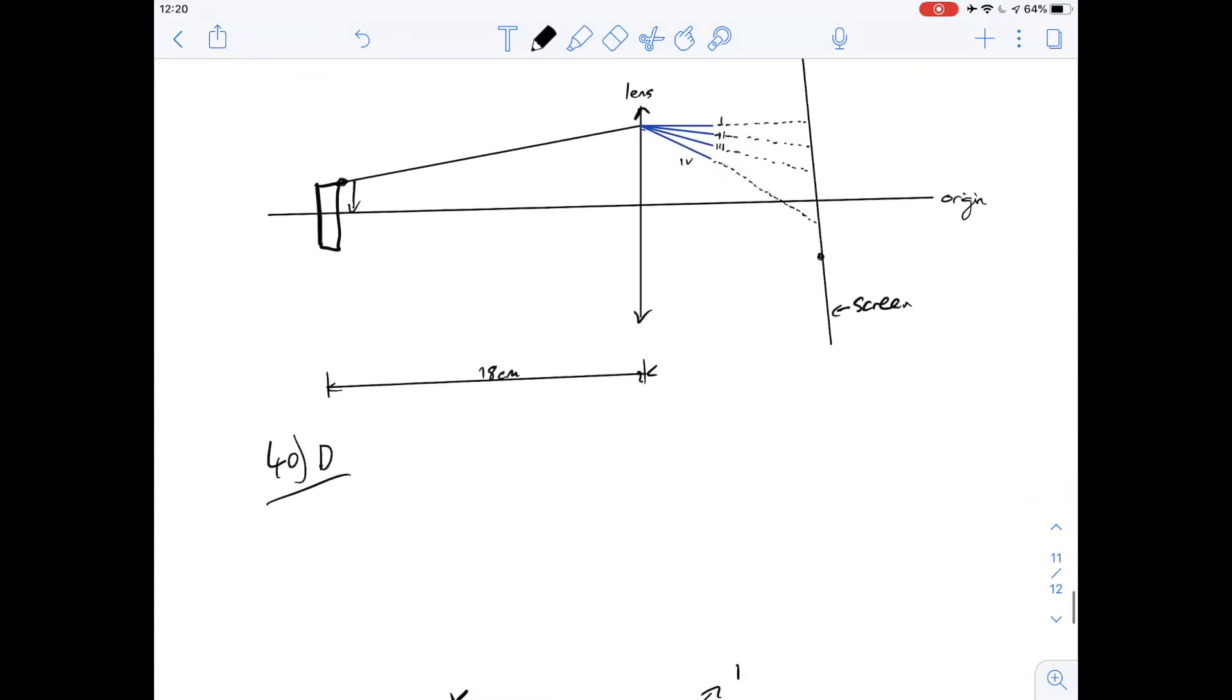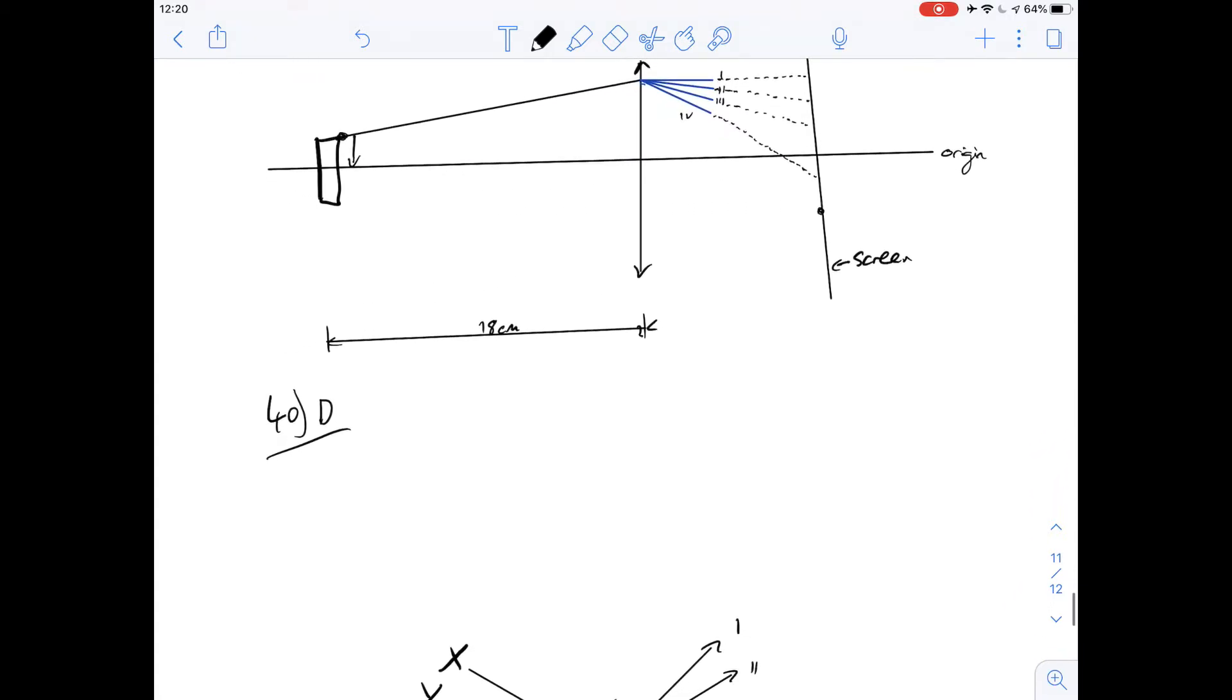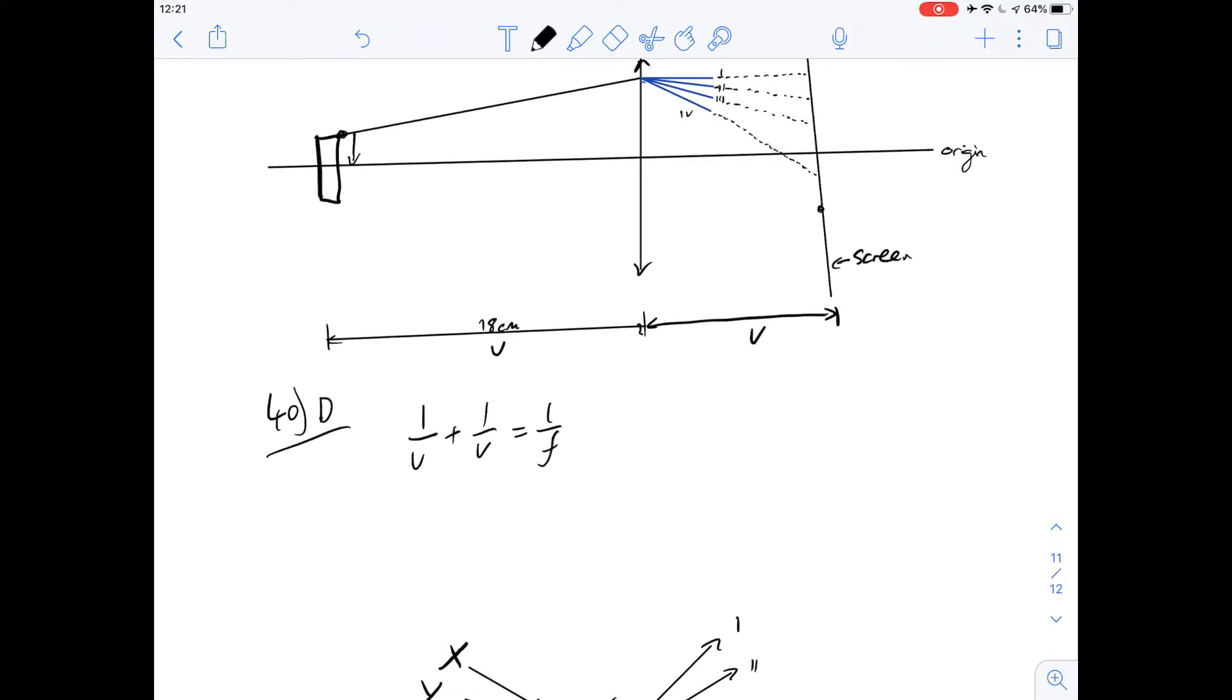Number 41 asks what is the distance of the screen from the lens? Well we know the lens equation which is 1 over u plus 1 over v equals 1 over f. And we're given all the numbers we need. So we know that u is going to be the distance between the object and the lens, so that's 18 centimetres. The distance between the screen and the lens, the screen is where the image is formed. We know that this is going to be v and we're given the focal length which is 6 centimetres.